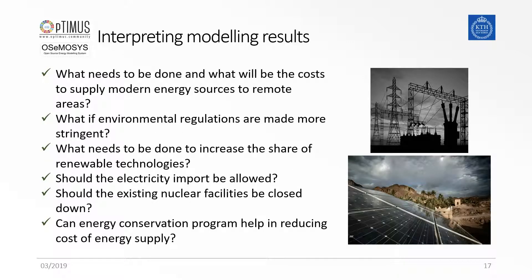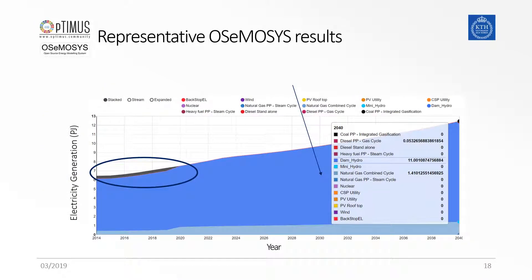More specifically, results may help answer questions like how best to electrify remote areas, what could be the implications of a more stringent regulation package, how to increase the share of renewable energy, and others. Here you can see a result graph generated by running a model in the MOMANI interface. The results show the generation by technology and by year for the given system.